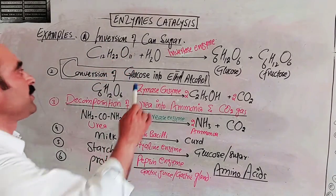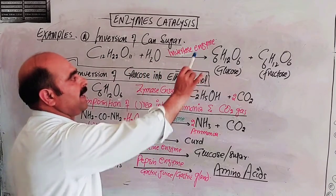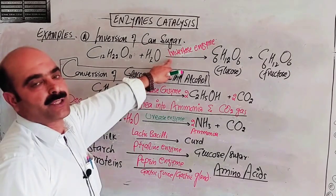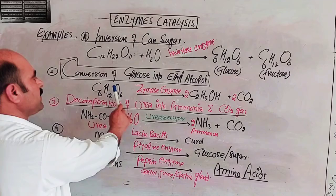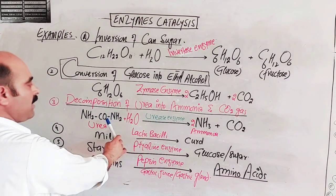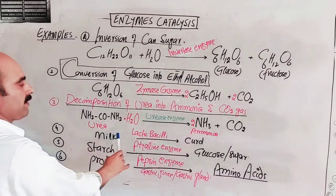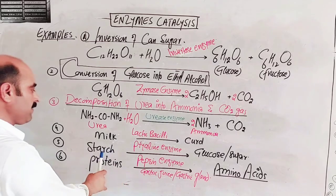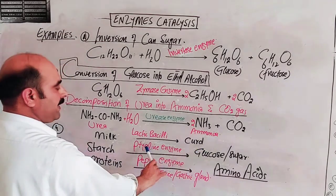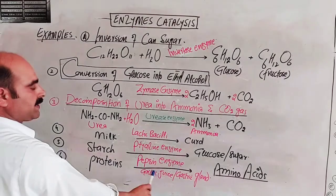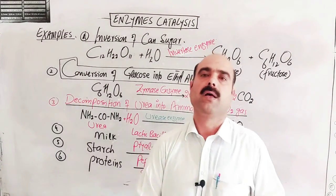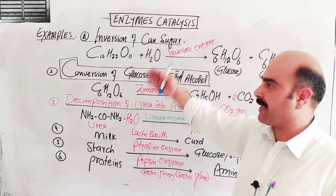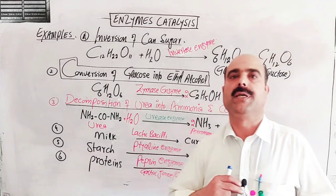To summarize enzyme catalysis: Invertase enzyme converts cane sugar into glucose and fructose; Zymase enzyme converts glucose into ethyl alcohol; Urease enzyme converts urea into ammonia and carbon dioxide; lactic bacilli enzyme acts on milk; Ptyalin or amylase enzyme converts starch to glucose; and Pepsin enzyme converts proteins into amino acids. These were all examples of enzyme catalysis. Thanks a lot for watching the video.